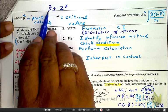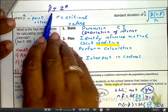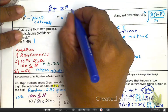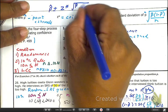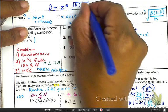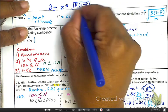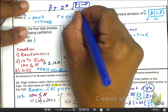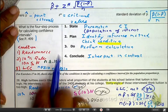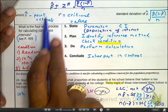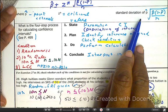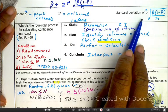So P hat, which represents the point estimate, plus or minus Z star, and Z star is the critical value. And that's going to be times P hat, which is the sample proportion, and then 1 minus P hat, which is the failure over N and taking the square root of that whole thing. So as I mentioned, point estimate, critical value, and standard deviation of the proportion.